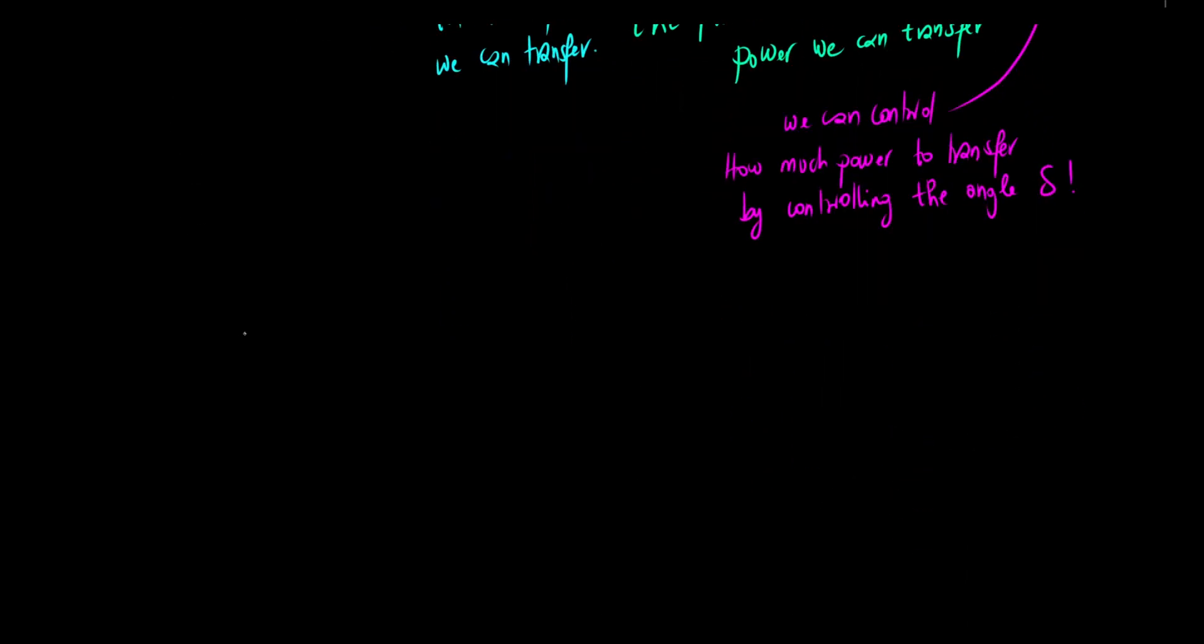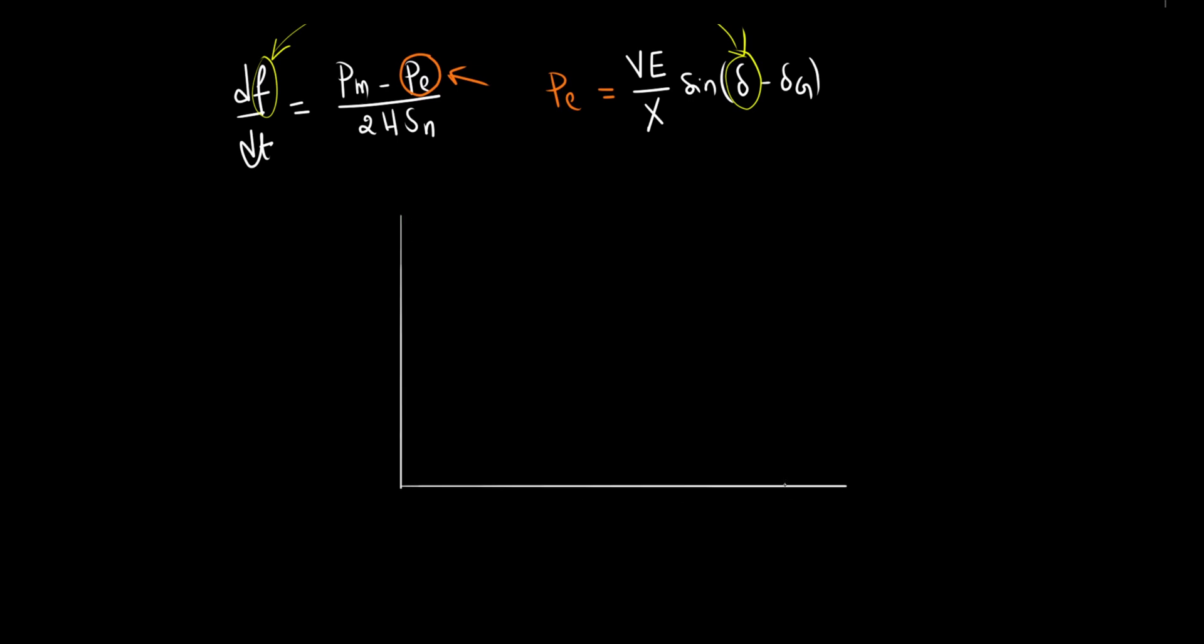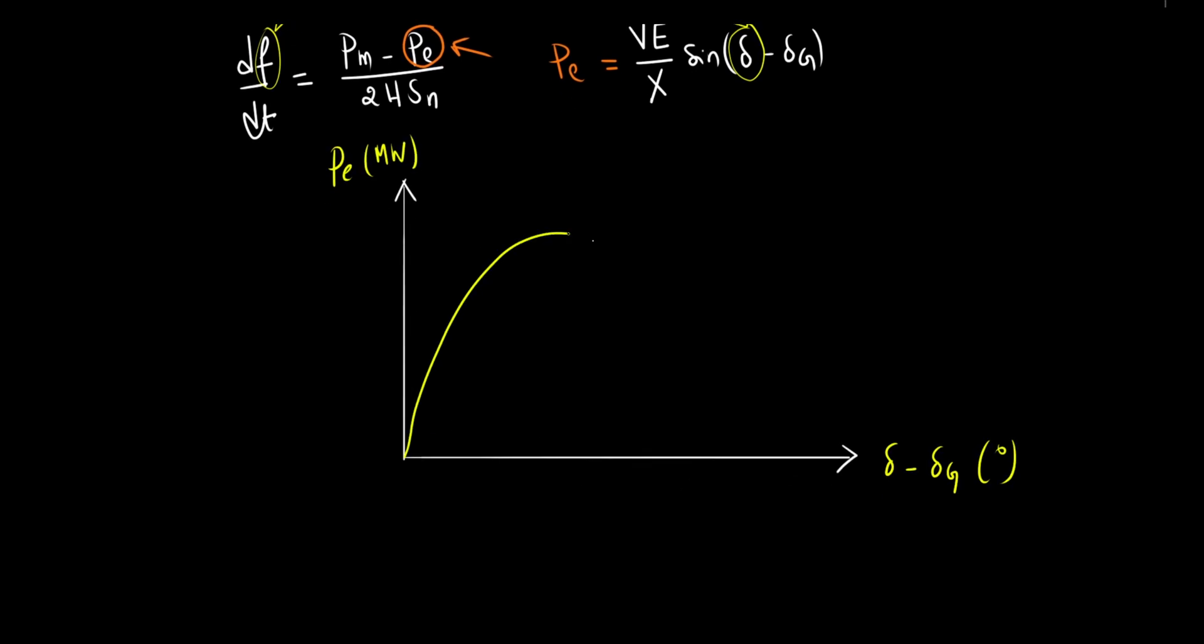Let me clarify the link between the swing equation and our power transfer equation. The electrical power in the swing equation can directly be replaced by our newly derived power transfer formula. Frequency, representing rotor speed, directly relates to the angular velocity of the rotor. Plotting power versus power angle gives us a familiar sinusoidal shape, peaking at 90 degrees, our maximum transferable power, called the pull-out power.